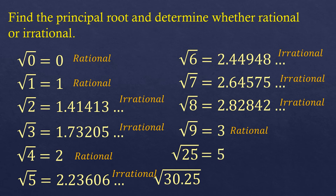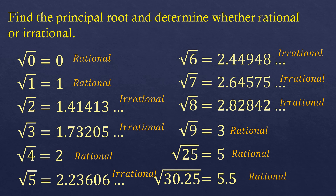The square root of 25 is five, which is rational. For the square root of 30.25, you might think it is irrational, but 5.5 times 5.5 equals 30.25. Although 5.5 is a decimal, it terminates — it stops at the tenths place — so the square root of 30.25 is 5.5, which is a rational root.